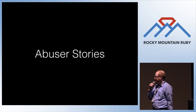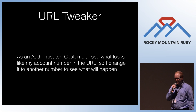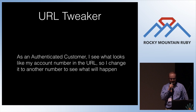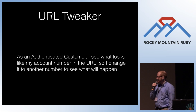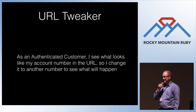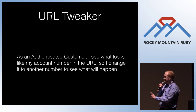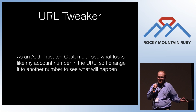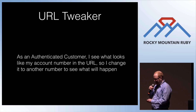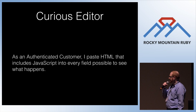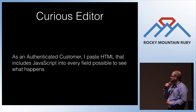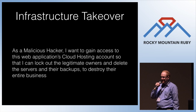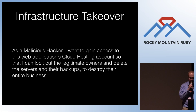The URL tweaker — let's talk about direct object reference, which is an OWASP top 10 issue. As an authenticated customer, I can see what looks like my account number in the URL, so I change it to another number to see what happens. This is very tempting for a non-technical stakeholder to say no one would ever do that. As an authenticated customer, I paste HTML that includes JavaScript into every field possible to see what happens. As a malicious hacker, I want to gain access to this web application's cloud hosting account so that I can lock out the legitimate owners, delete the servers, and generally destroy their business — and if you think this is exaggerating, it really happened to Codespaces in 2014.